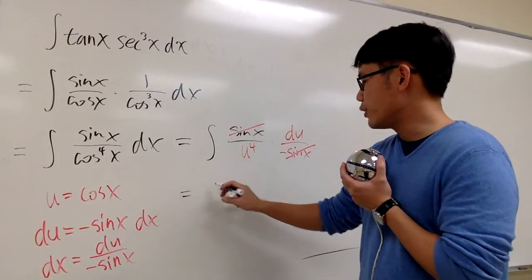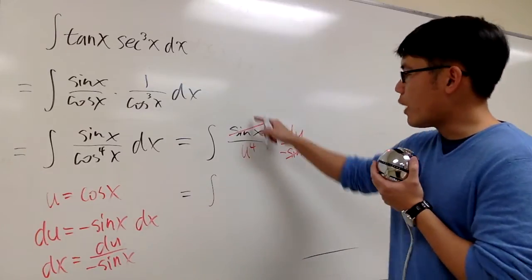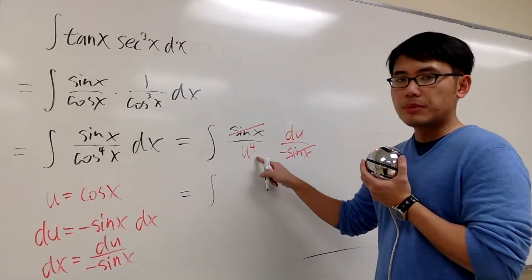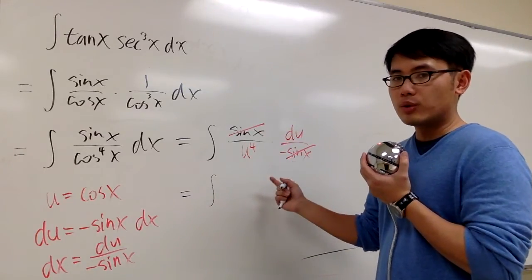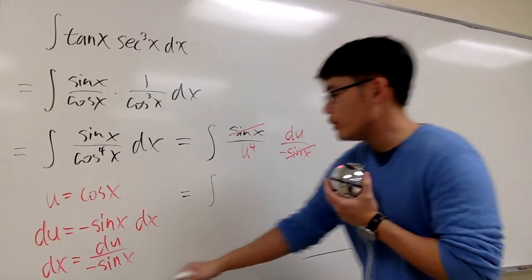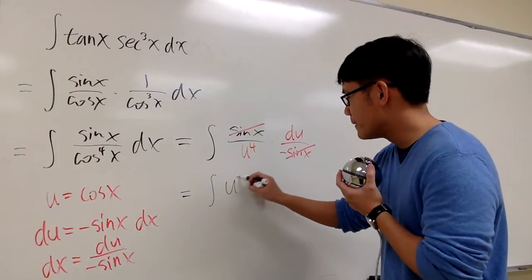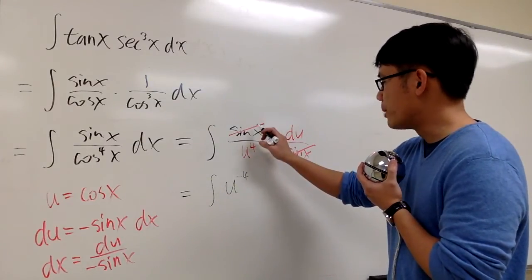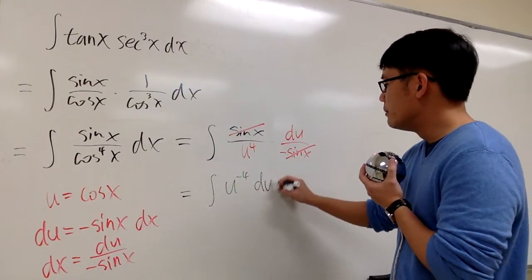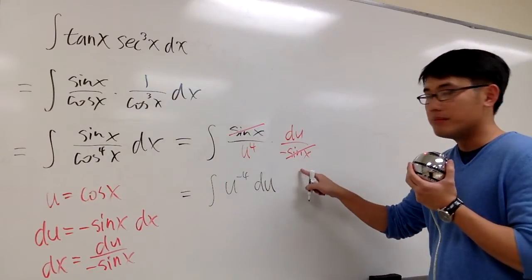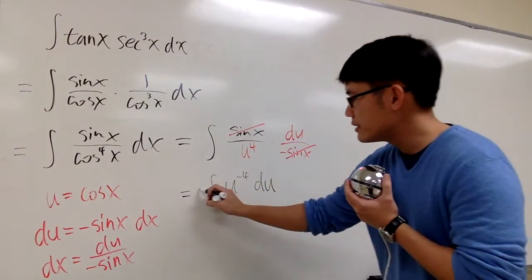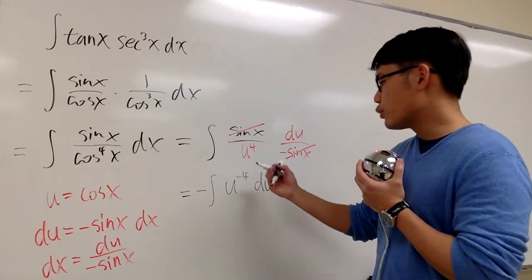Well, let's see how we can integrate this. This is the integral of 1 over u to the fourth power. We have to use the power rule backwards. To do that, we have to make sure we write this as u to the negative four power. This is u to the negative four power, du, and we still have a negative right here, but let me take the negative out to the front. And now we are ready.